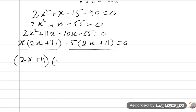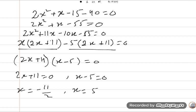2x plus 11 is equal to 0, x minus 5 is equal to 0. x is equal to minus 11 upon 2, and x is equal to 5. So the positive value is 5. The answer is x is equal to 5. It is the required answer. Thank you so much.